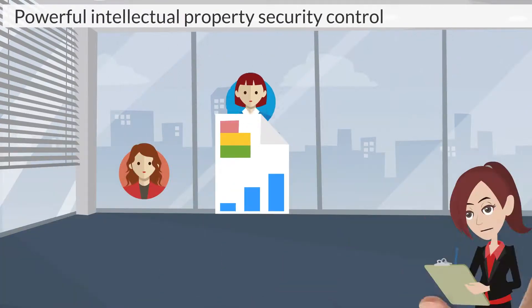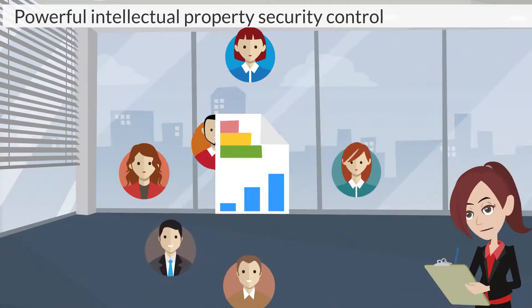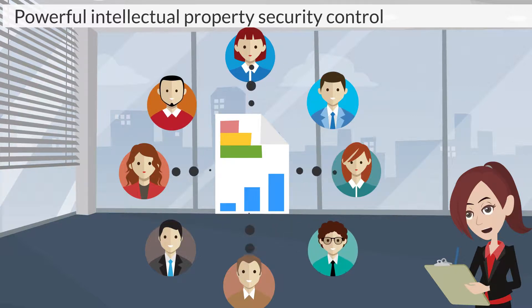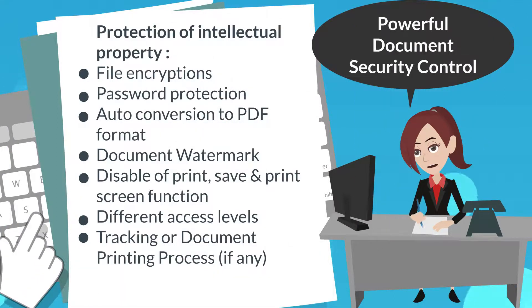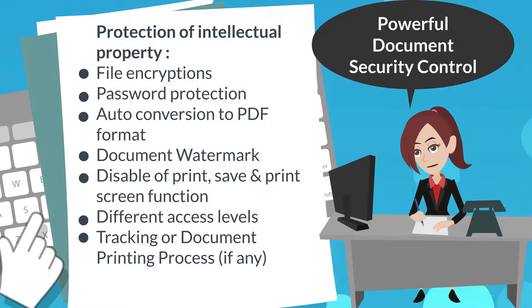Smart DMS has powerful document security control functions such as password protection, document watermark, access level control, and the ability to disable print screen and save-as functions. In short, this is the summary of Smart DMS security control functions. Your management is going to have peace of mind for intellectual property control.